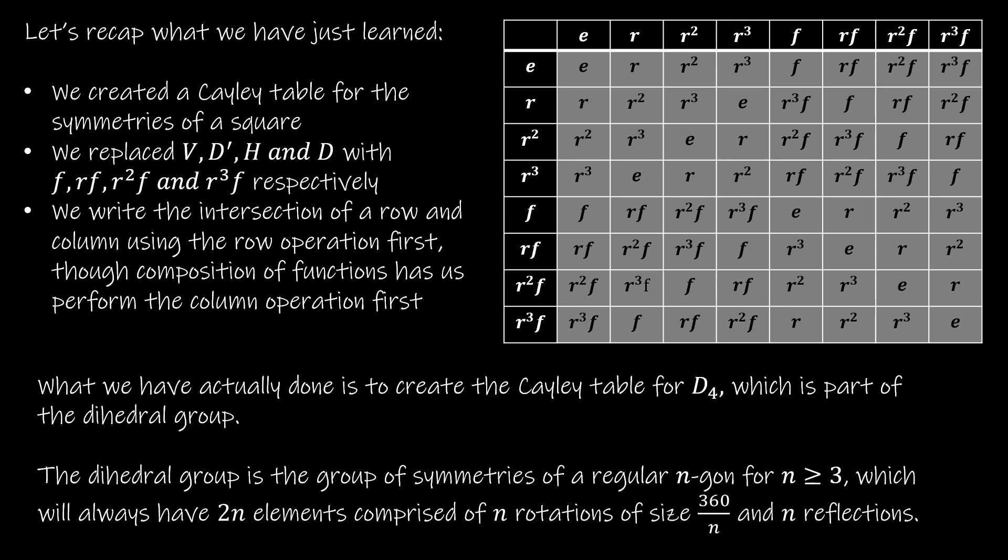We replaced V with F, we replaced D prime with RF, H with R squared F, and D with R cubed F respectively. And then we remember that if I'm trying to find a particular intersection of the composition of two actions, I'm going to write it as first taking the row and then the column, but when I actually perform the operations, I'm going right to left.